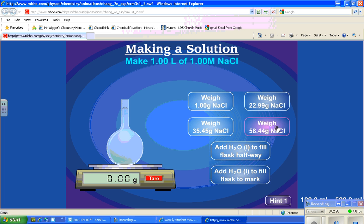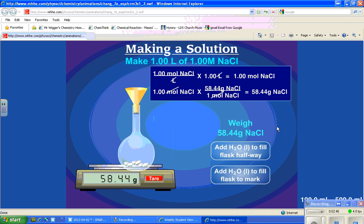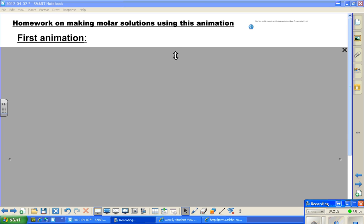Now, we're going to weigh out 58.44 grams of sodium chloride. You're going to have to show your calculation for that. Let's go ahead and press that and see what happens, and then I'll explain what we've done so far and how to write it down. Correct. You need to add 58.44 grams of sodium chloride to the flask to prepare 1.00 liter of 1.00 molar sodium chloride.